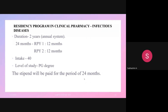The JSS residency duration is 2 years on an annual system: Year 1 for 12 months and Year 2 for 12 months. They take an intake of approximately 40 students, it is a PG degree course, and a stipend is paid throughout the 24-month period.